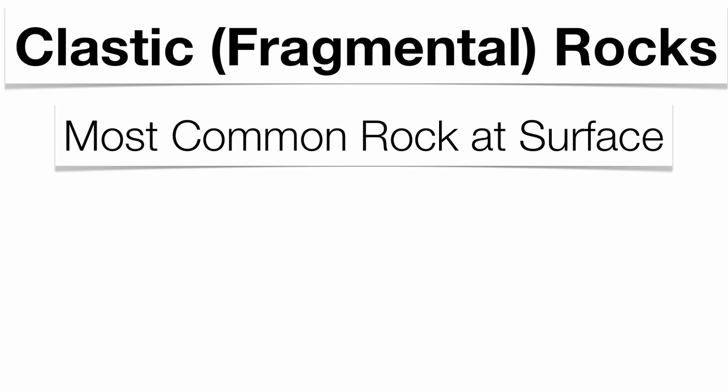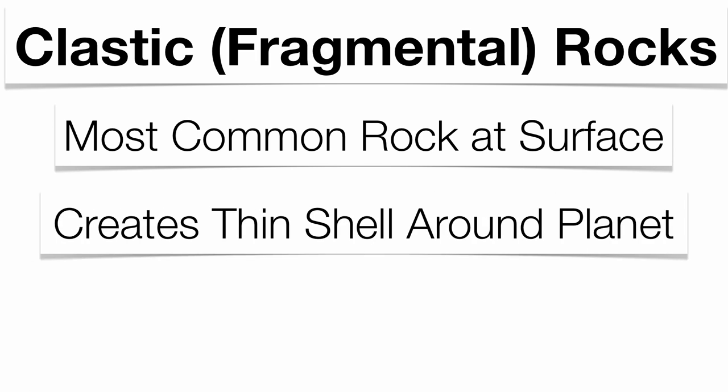Your clastic rocks are going to be the most common type of rock found at the surface. There are a lot of features in this rock that are unique to sedimentary rocks, which we'll talk about in a little bit. Because of the features found in them and the process that creates them, they're going to make a very thin shell around our entire planet.